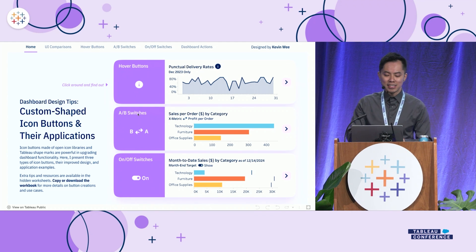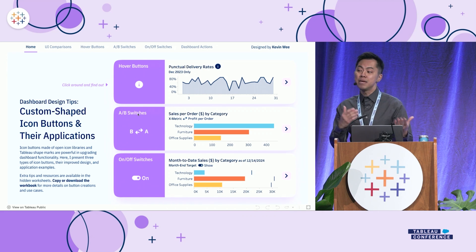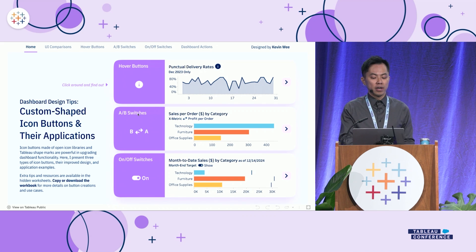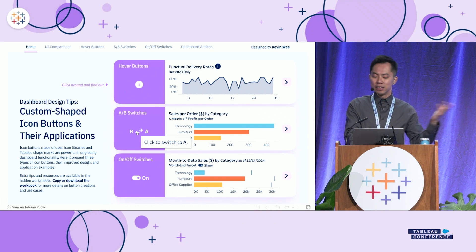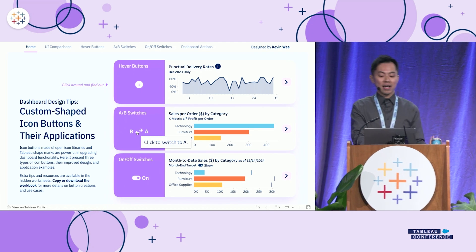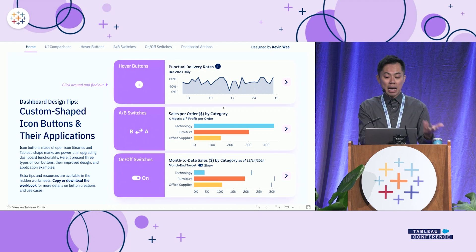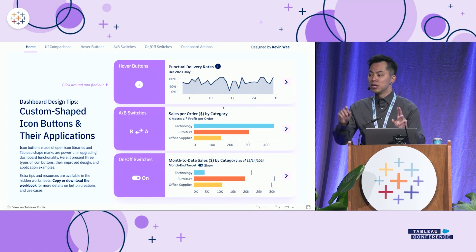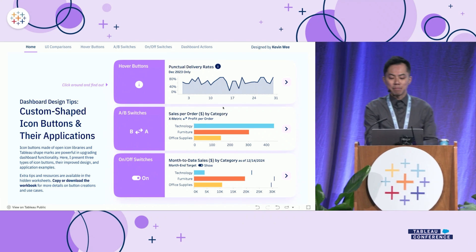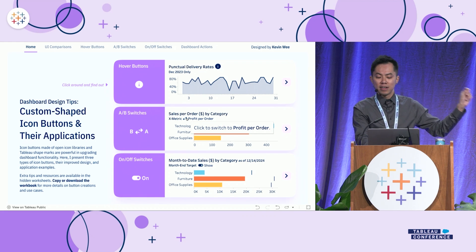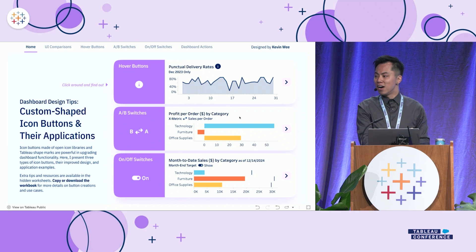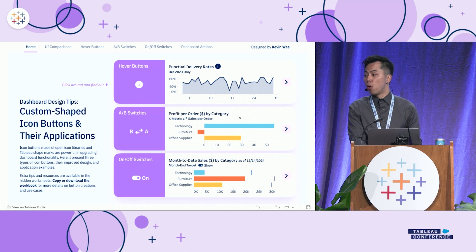The second kind of icon button is called an A-B switch. It lets you switch between setting A and setting B in the same chart when you click it — back and forth. An example would be switching the X-metric between two different metrics: currently the X-metric for this chart is sales per order by category, and when you click the icon, it switches to profit per order by category.